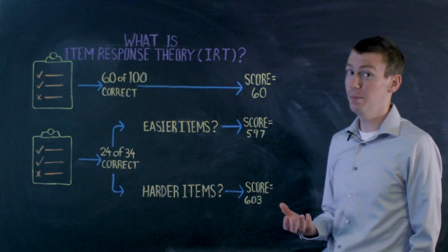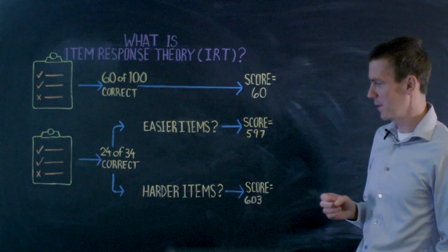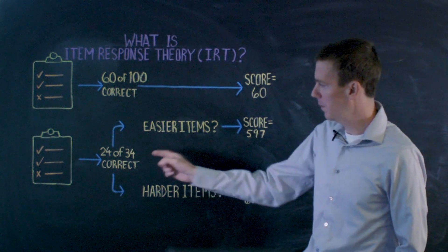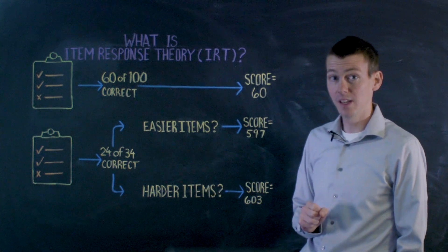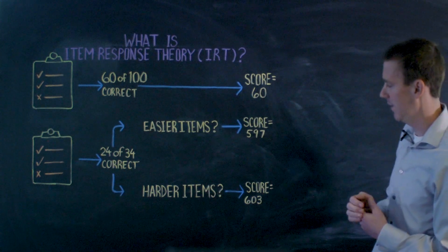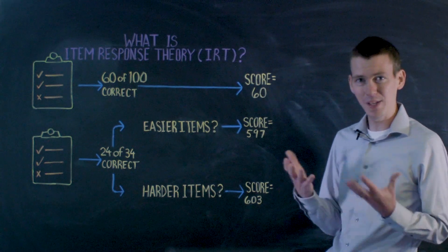Now, a lot of modern tests work a bit differently than that. We can think of a computer adaptive test, for example. Here we may have two different students that get 24 out of 34 items correct, and they end up with different scores. One of the students gets 597, and the other student gets 603. How is that possible?